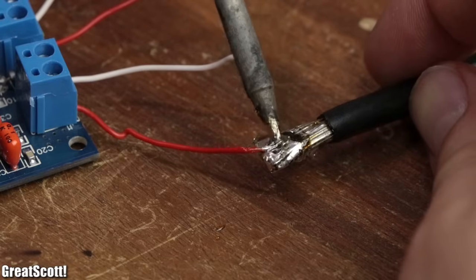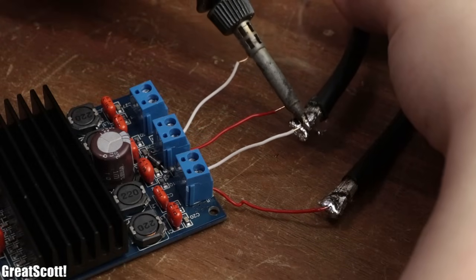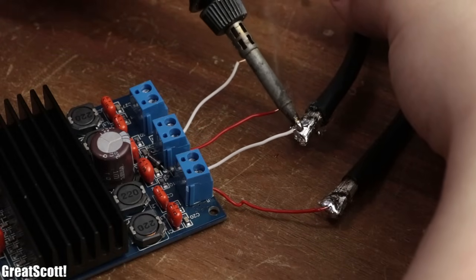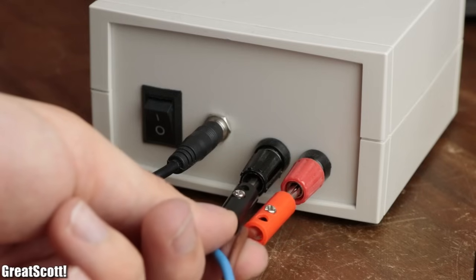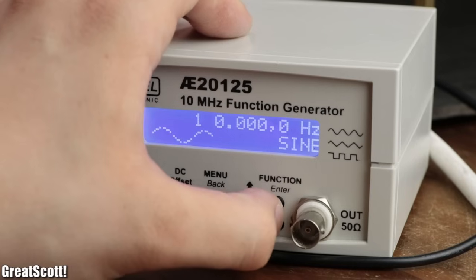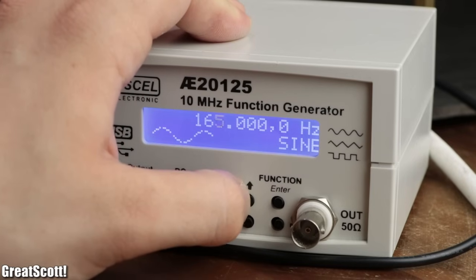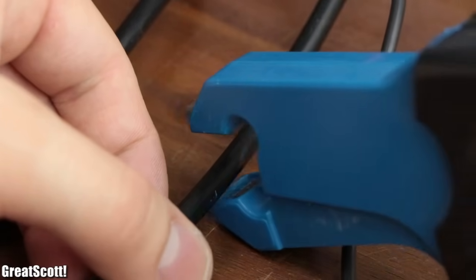To find out the inductance of the primary coil though, I soldered it to the output of a Class D audio amp that I had lying around. And after removing the secondary coil, I connected the output of my function generator to the input of the audio amp, created a sine wave with the resonant frequency of the secondary, and measured the voltage and current through the primary.